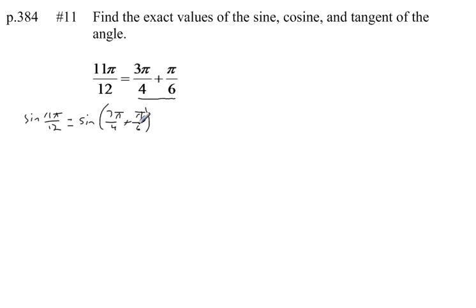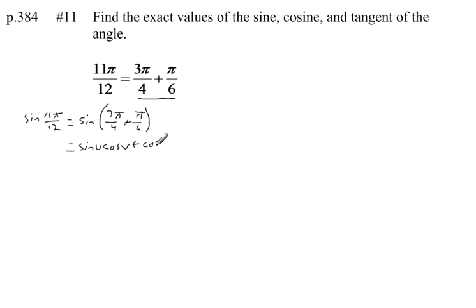I know the sum and difference formula: the sine of u plus v equals the sine of u times the cosine of v plus the cosine of u times the sine of v. Let's plug these values in for u and v.